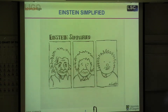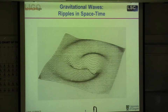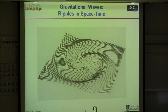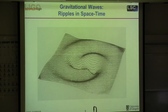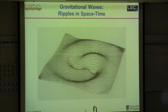If gravity is the curvature of space-time, then a gravitational wave is a ripple in space-time. We can make a simple analogy to dropping a stone into a pond — the ripples spread out from where the stone dropped in. That's exactly what a gravitational wave does as it spreads out through space: there are areas where space is stretched and other areas where space is compressed.